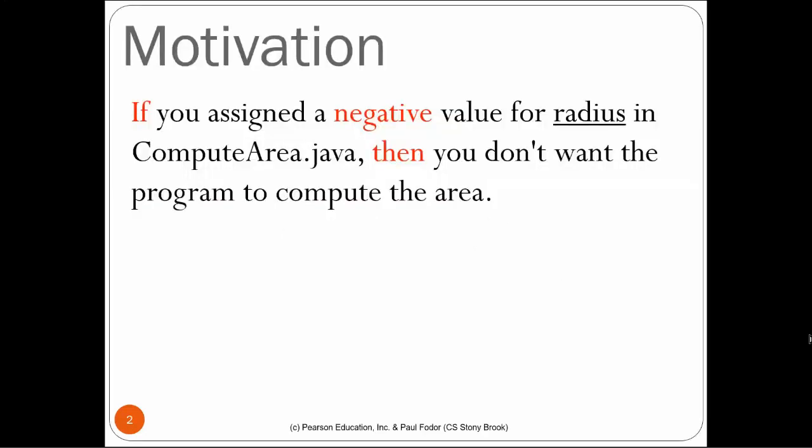The motivation originates from the previous lecture, where we had a program to compute the area of a circle given a radius entered by the user. It doesn't make sense to compute the area of a circle with a negative radius. So if the user assigns a negative value, we should not print the area — we should inform the user that they entered a negative radius.